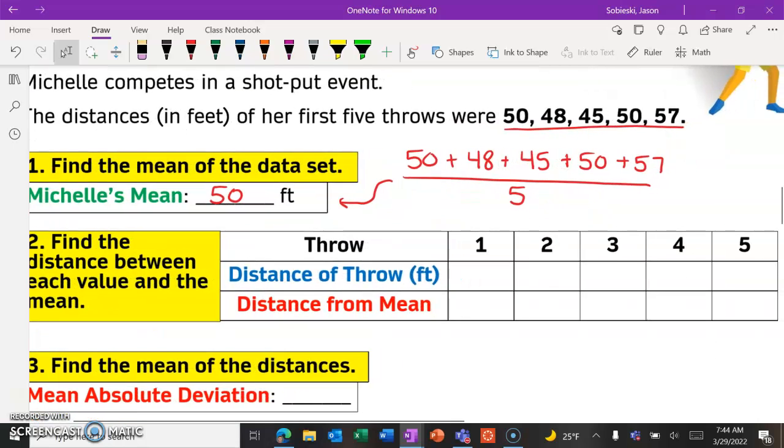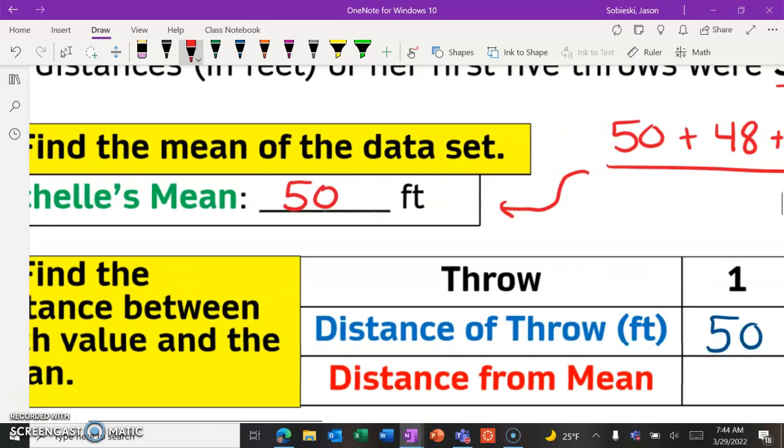On our table, we are going to use this to calculate the distance between the mean and each value. So the first throw they told us was 50 feet, then 48, 45, 50, and 57. So what we have to do is figure out how far apart each of these numbers are from the mean, which was 50.